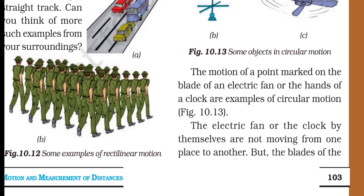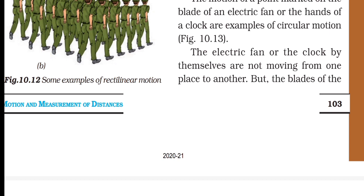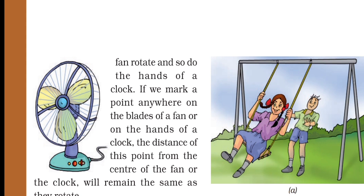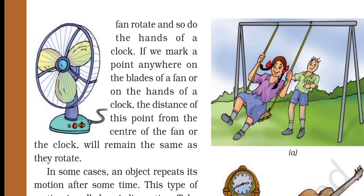An electric fan or the hands of a clock are examples of circular motion. The electric fan and clock are not moving from one place to another, but the blades of the fan rotate and so do the hands of a clock. If we mark a point anywhere on the blade of the fan or the hands of a clock, the distance of that point from the center will remain the same as they rotate.